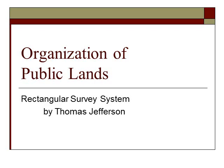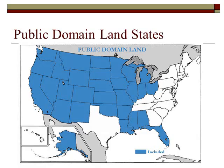Welcome. Today we're going to discuss the organization of public lands, often referred to as the Rectangular Survey System. The Rectangular Survey System was put in place with the Land Ordinance of 1785 so that we had a systematic means of organizing or surveying all of the public domain lands, which are shown as the blue states on the map.